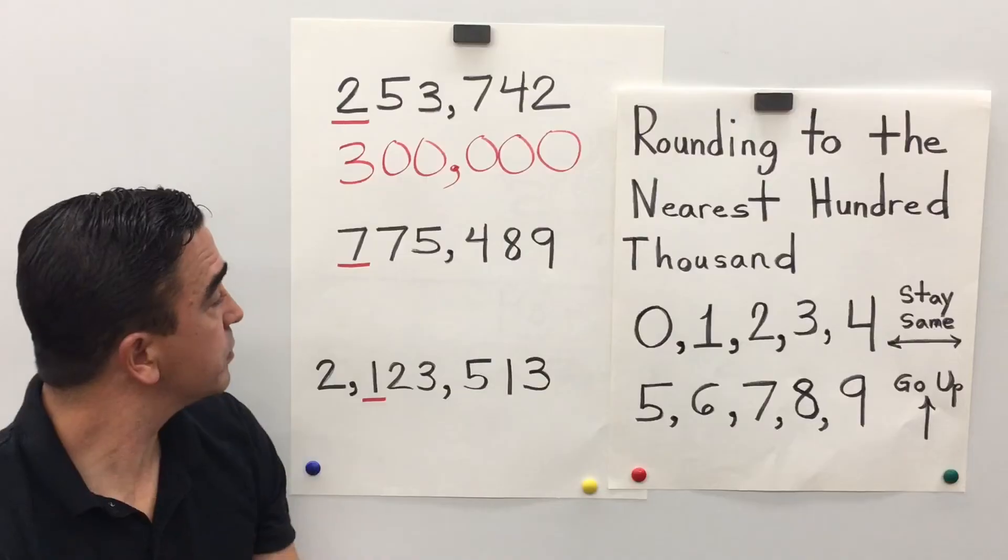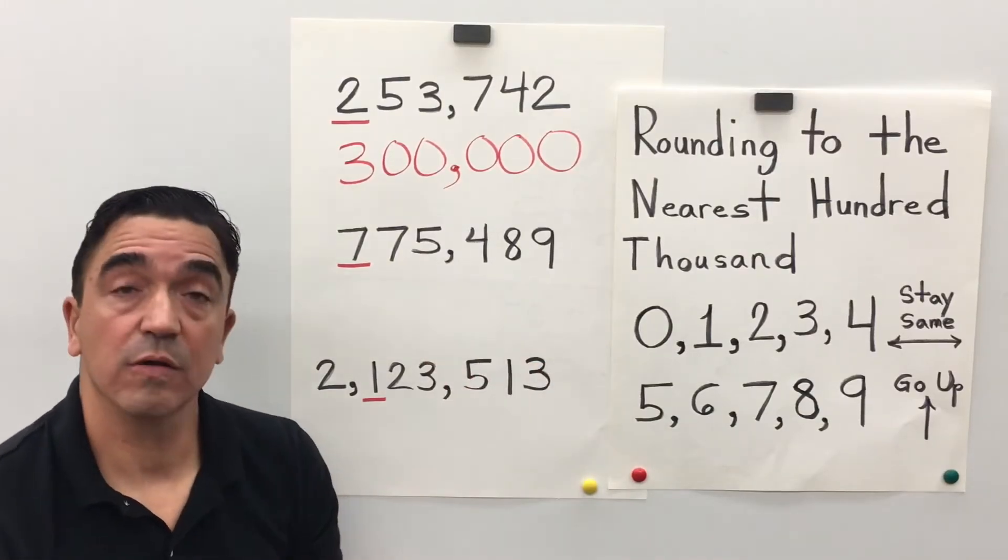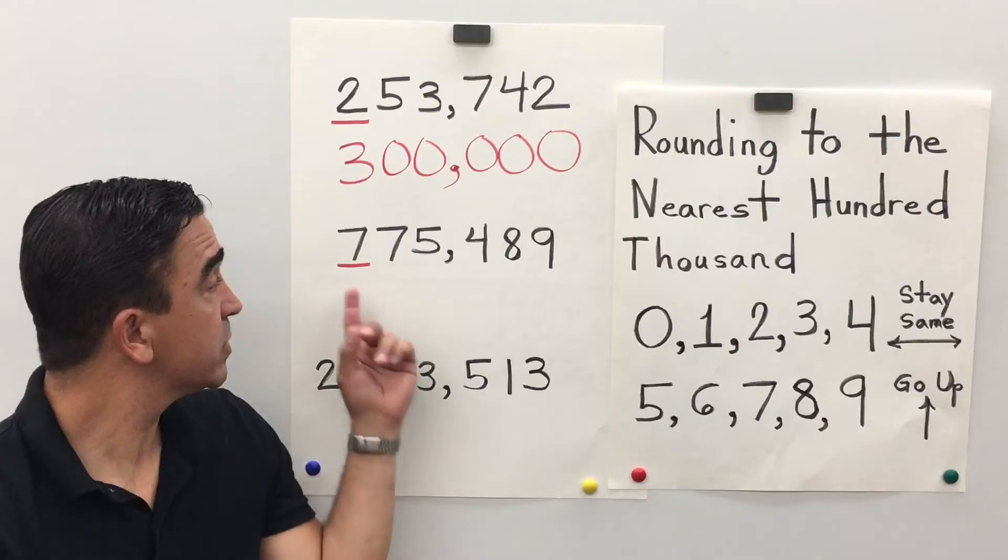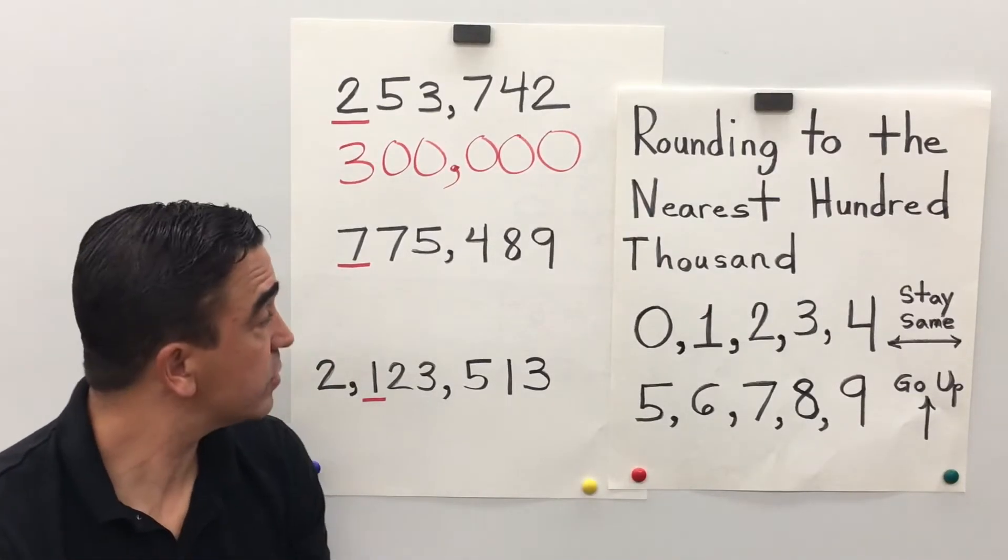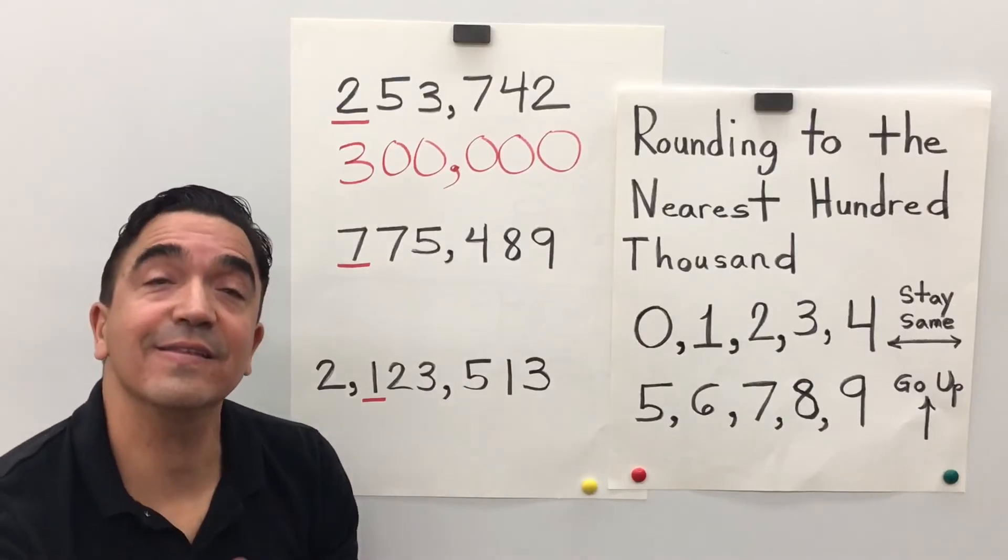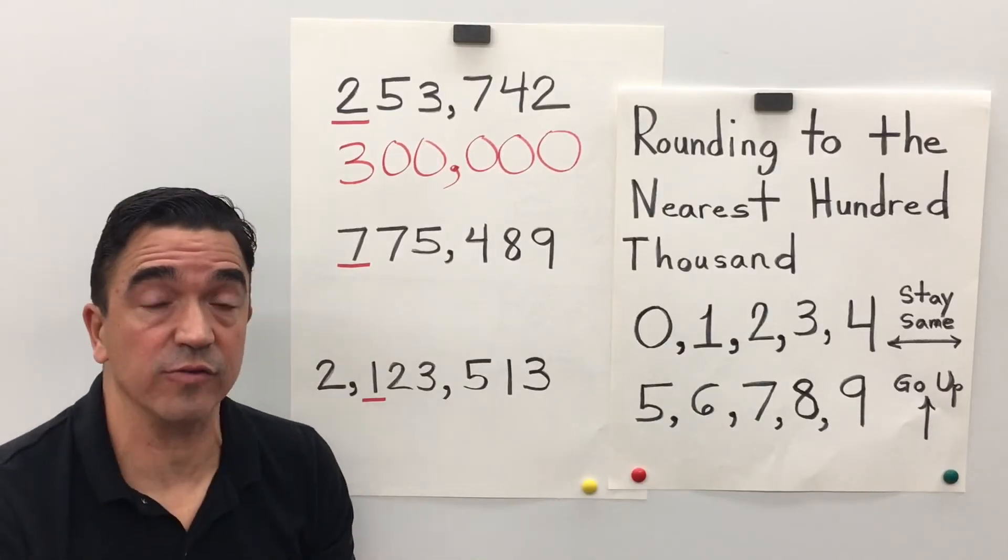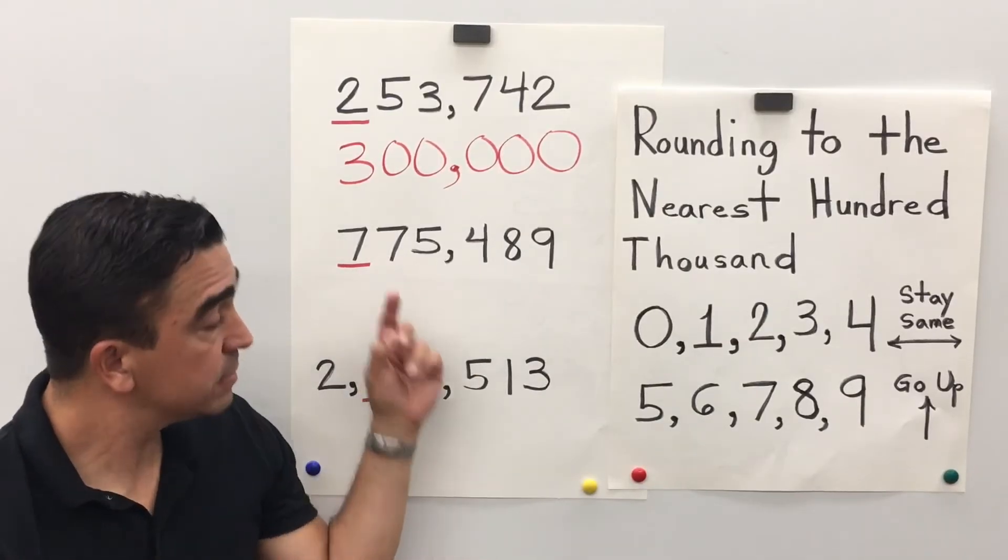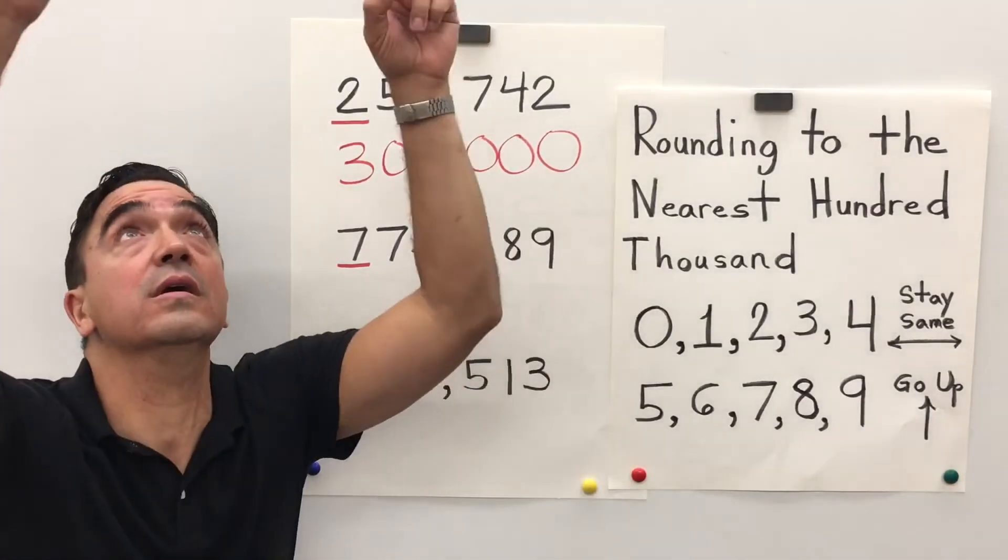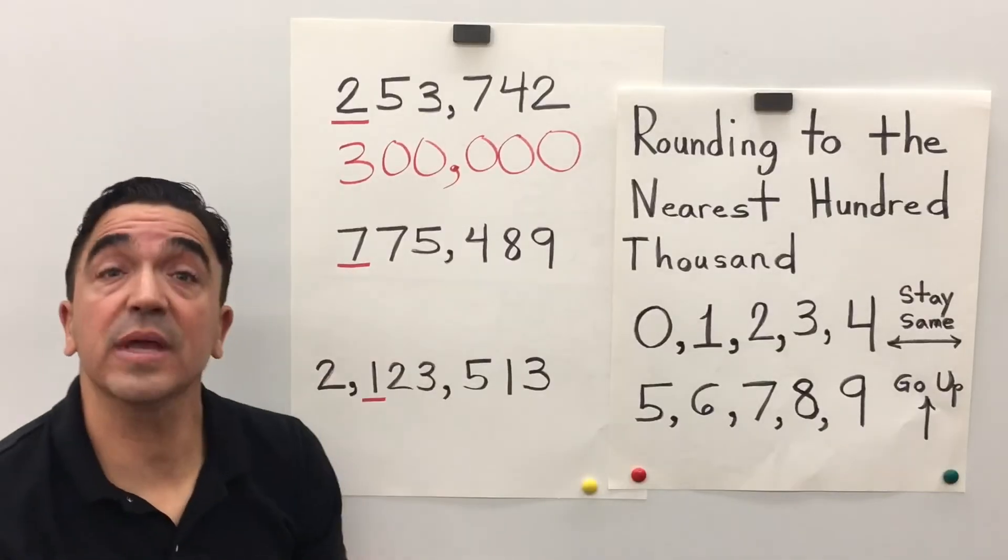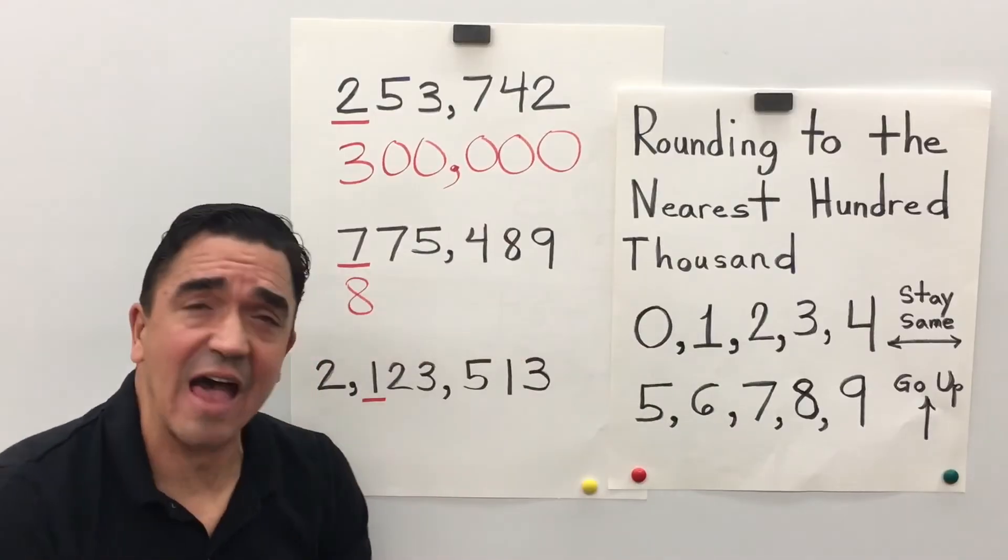Let's look at number 2, 775,489. Once again, I've underlined the 7. That is in the hundred thousandths place. The 7 in the ten thousandths place is going to tell the 7 in the hundred thousandths place what to do. The 7 is going to tell the 7 to go up. So that becomes an 8. And all the digits after become zeros.